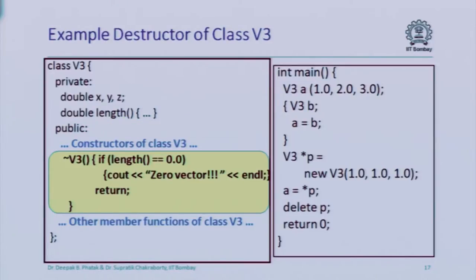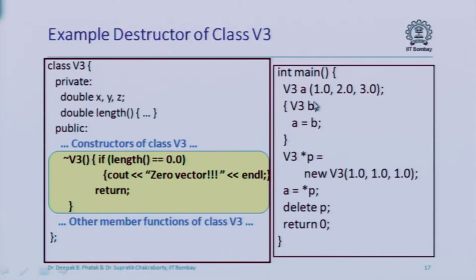Every time an object is allocated, the constructor is called. An object declared within a pair of braces is not available outside those braces, so it is deallocated there and the destructor is called. At the end of main, when main returns, all local variables are freed up. So the object A, which is a local variable of main, is also deallocated and its destructor is called. Within the destructor function, just like any other member function, you can access other member functions.